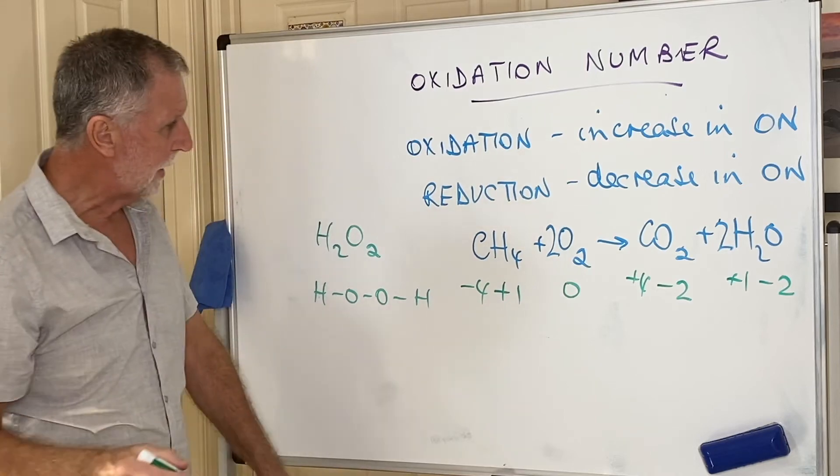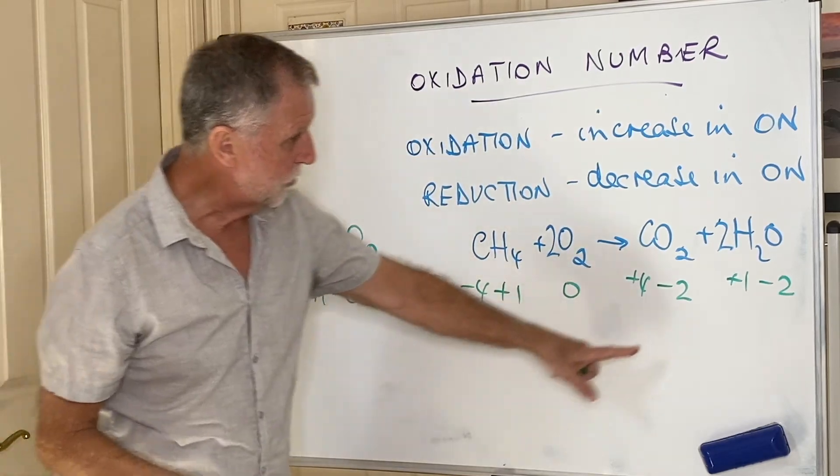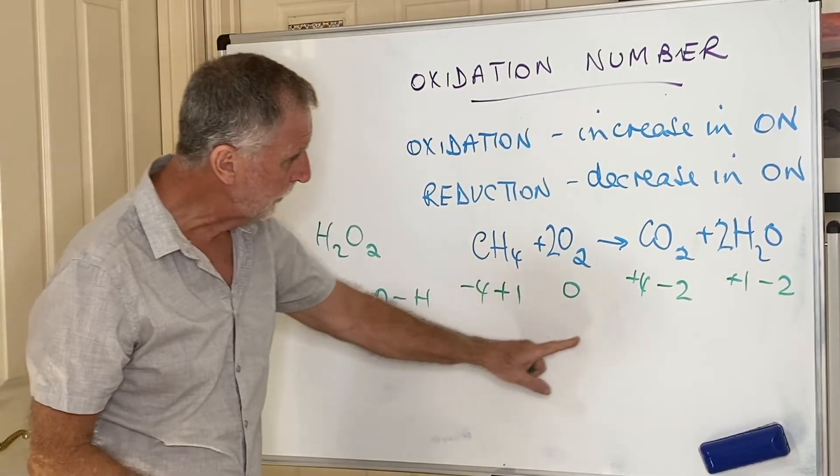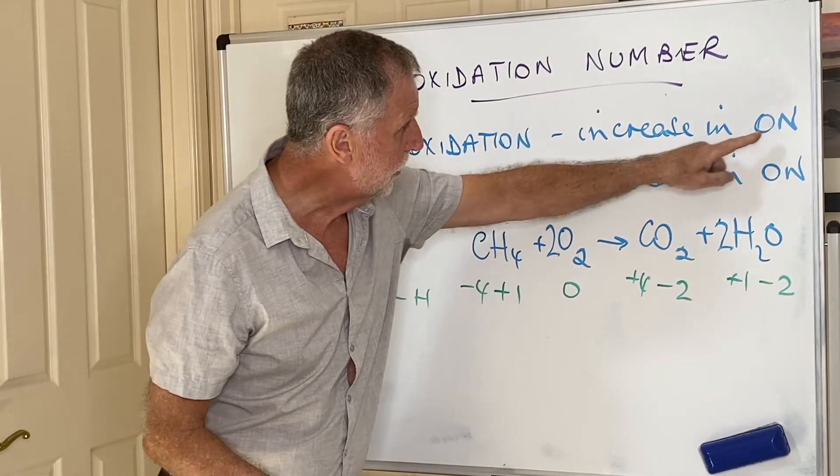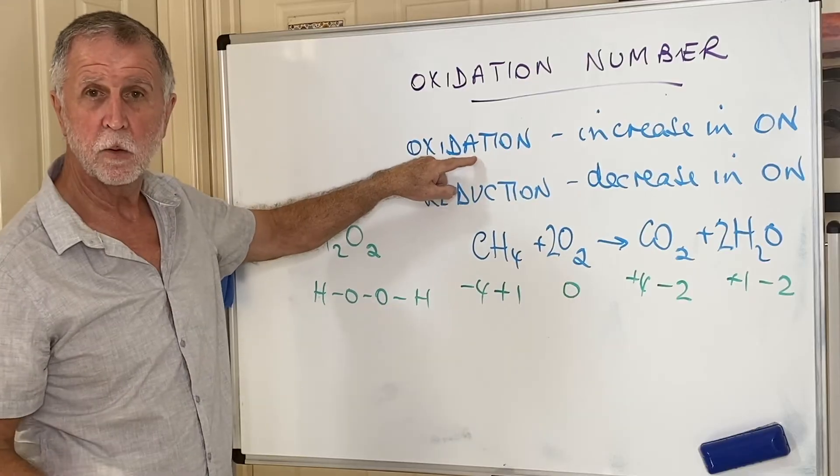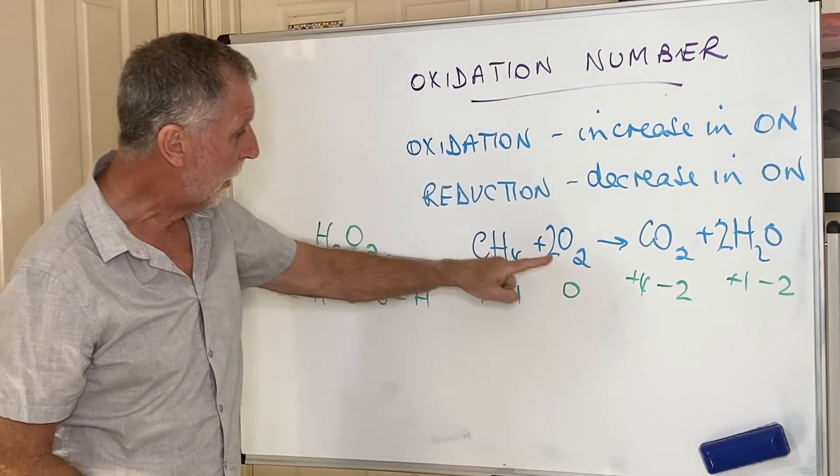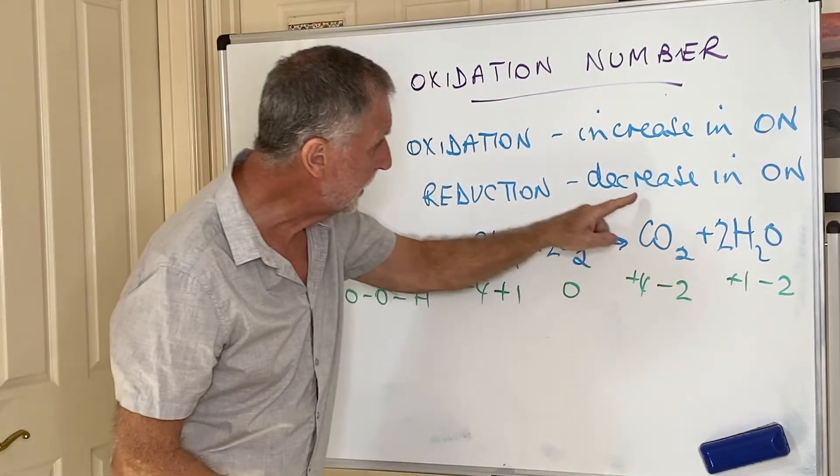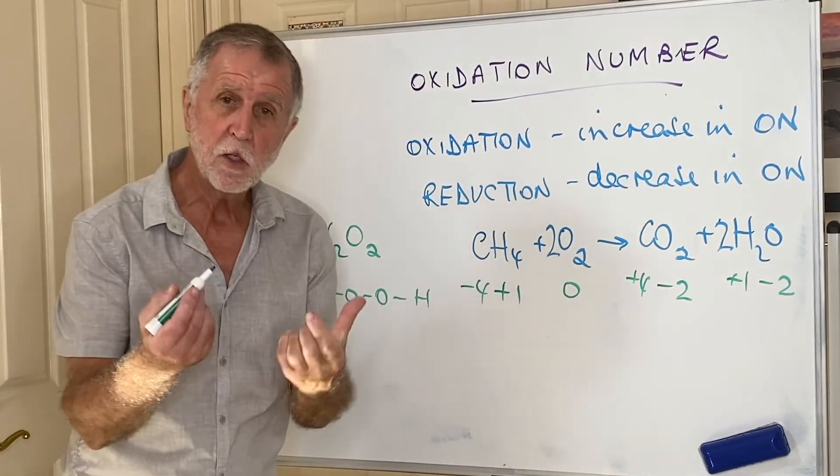You will see that the hydrogen hasn't changed at all. However, the carbon has gone from -4 to +4. An increase in oxidation number—it's been oxidized. Oxygen has gone from zero to -2. A decrease in oxidation number is reduction.